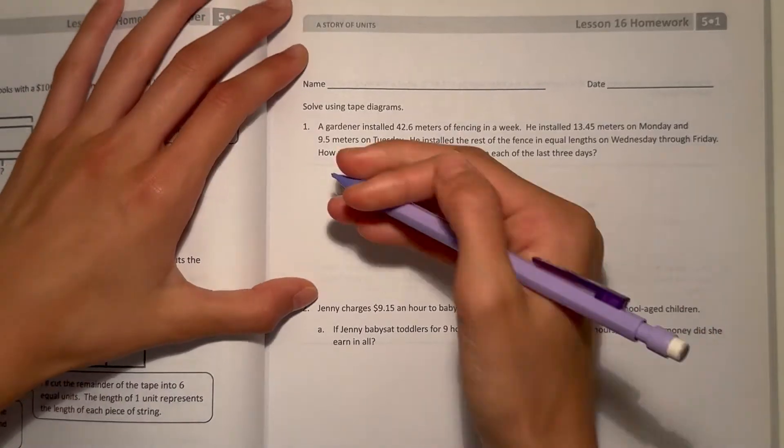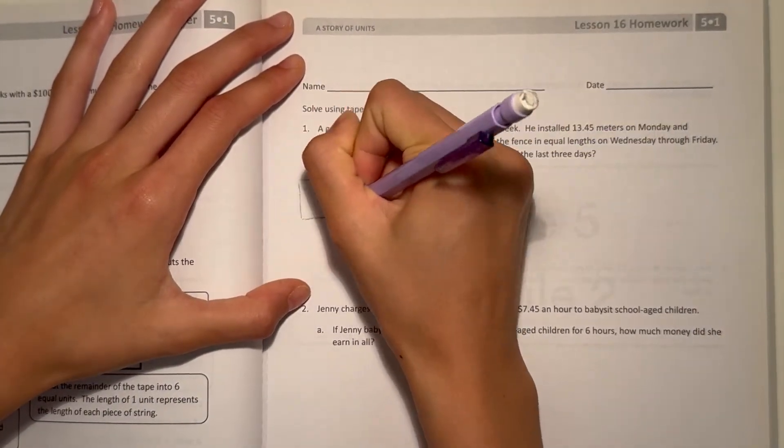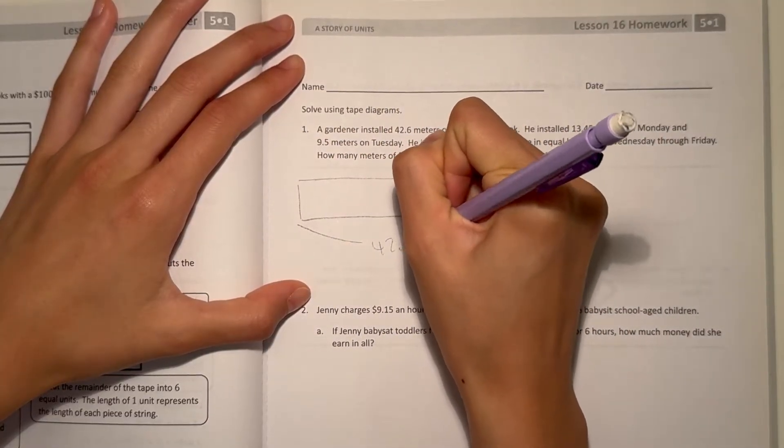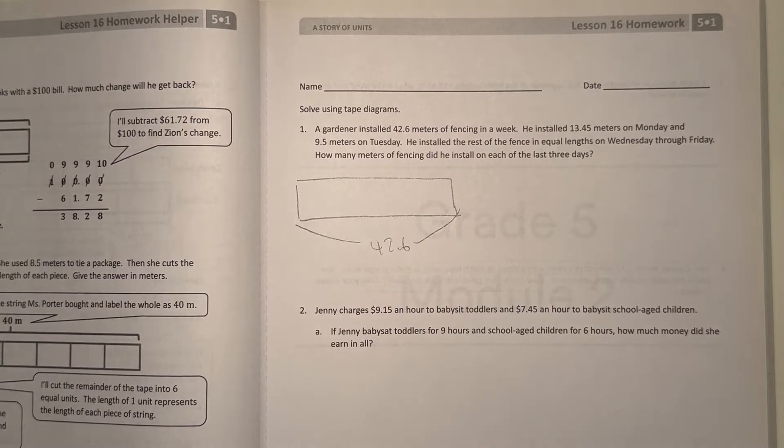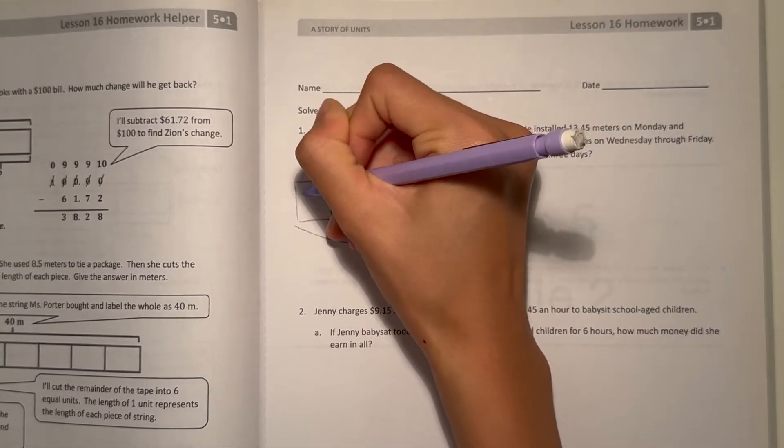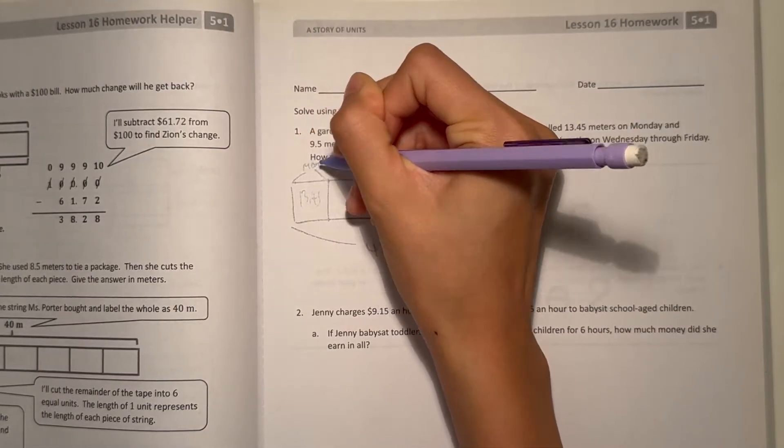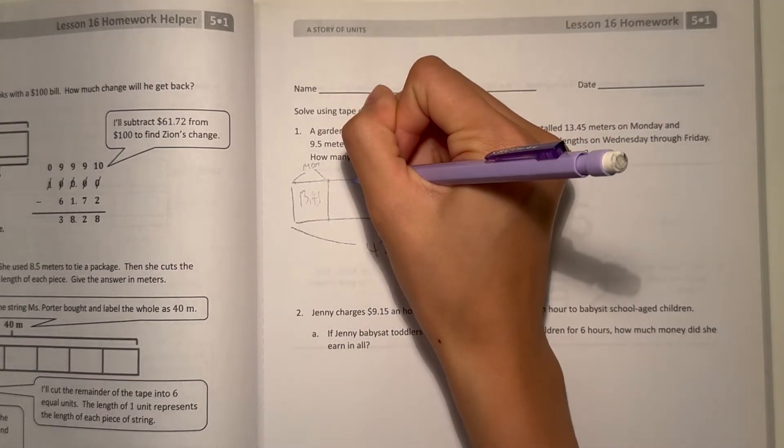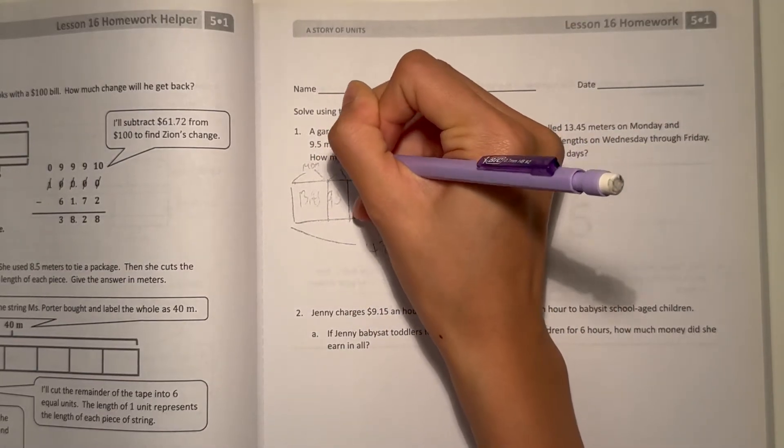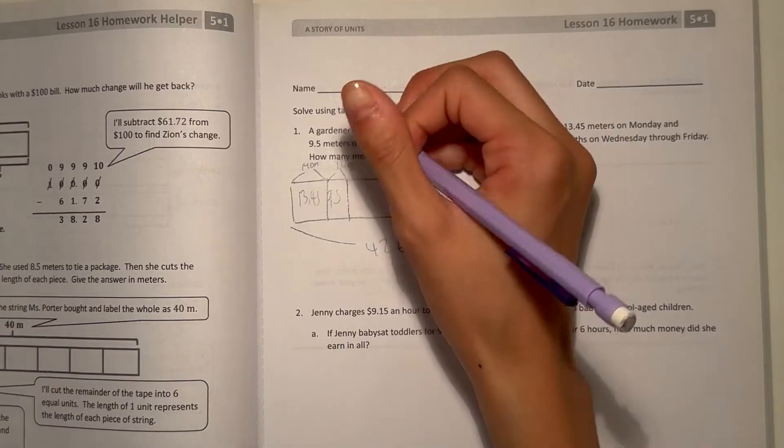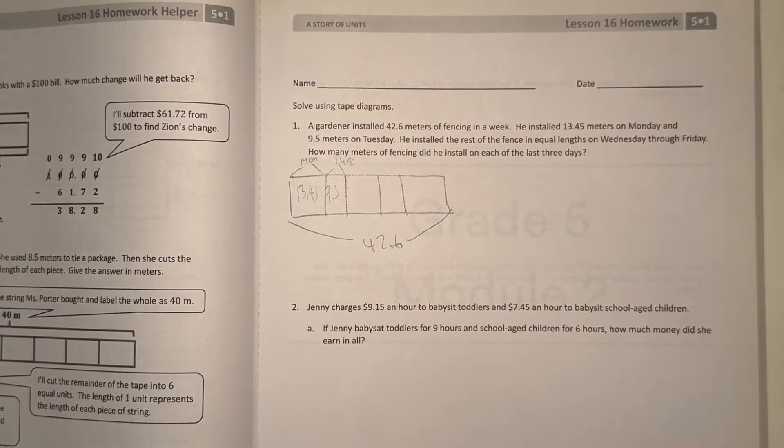He installed 13.45 meters on Monday and 9.5 meters on Tuesday, and the rest of the fencing in equal lengths on Wednesday through Friday. How many meters of fencing did he install on each of the last three days?